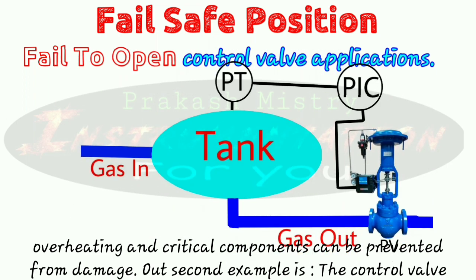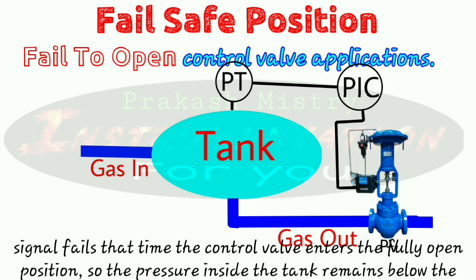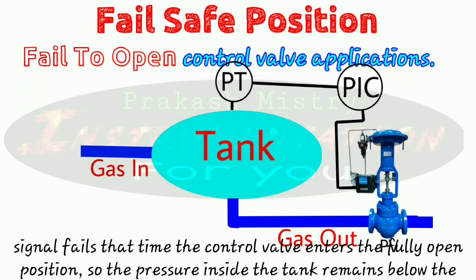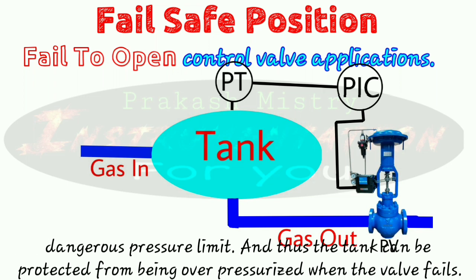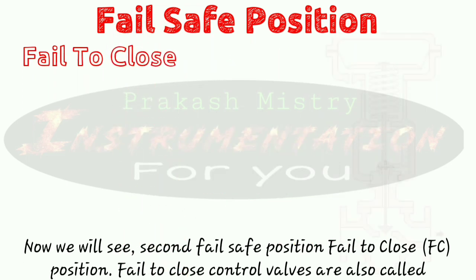A second example is the control valve which is regulating the pressure of a tank — it should be fail to open. So that whenever the power signal or control signal fails, the control valve enters the fully open position, and the pressure inside the tank remains below the dangerous pressure limit. Thus, the tank can be protected from being over-pressurized when the valve fails.